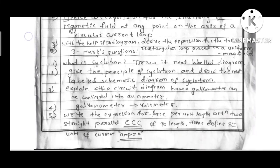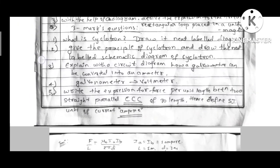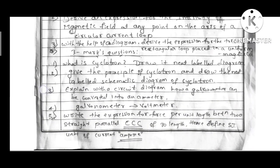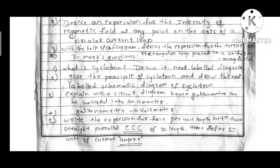Second question, derive an expression for the intensity of magnetic field at any point on the axis of a circular current loop. This is how you practice. And third question, this is a 5 marks question.